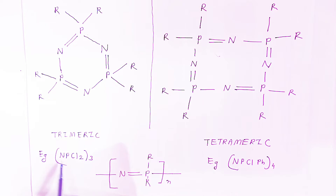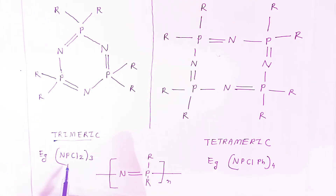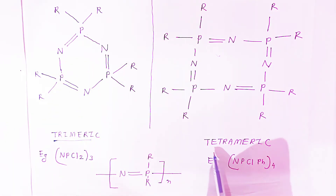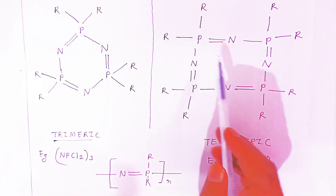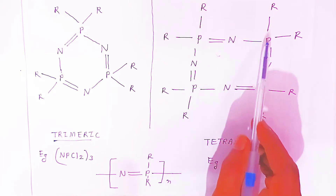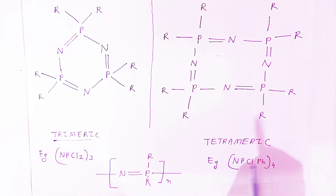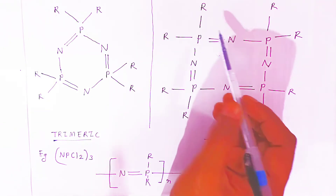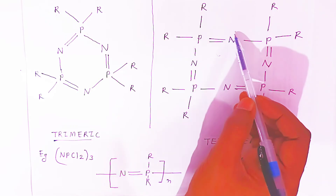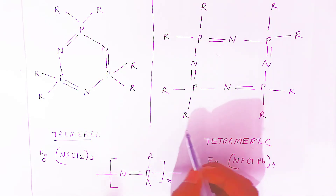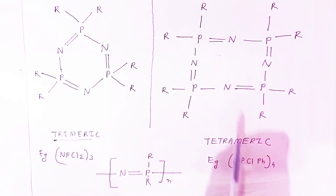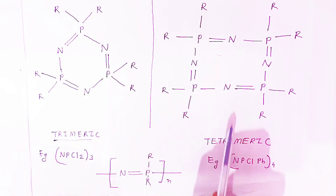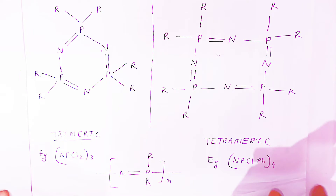This is called hexachlorotriphosphazene — the trimeric structure. When you come to the tetrameric structure, phosphorus-nitrogen double bonds and nitrogen-phosphorus single bonds form the tetrameric ring. The alkyl groups are arranged based on the oxidation states: phosphorus is +5 and nitrogen is +3. So this is the trimeric structure, and this is the tetrameric structure of the compound.